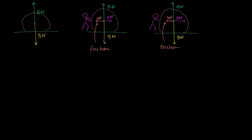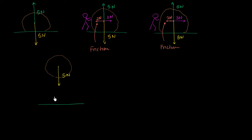Now let's imagine the rock is not resting on the ground. The only force acting on the rock is the force of gravity acting downwards — 5 Newtons down. But I have some air resistance, which you could view as the force of friction of the air. And let's say that is 1 Newton up. This is air resistance as the rock bumps into all of the air particles as it is falling to the ground.